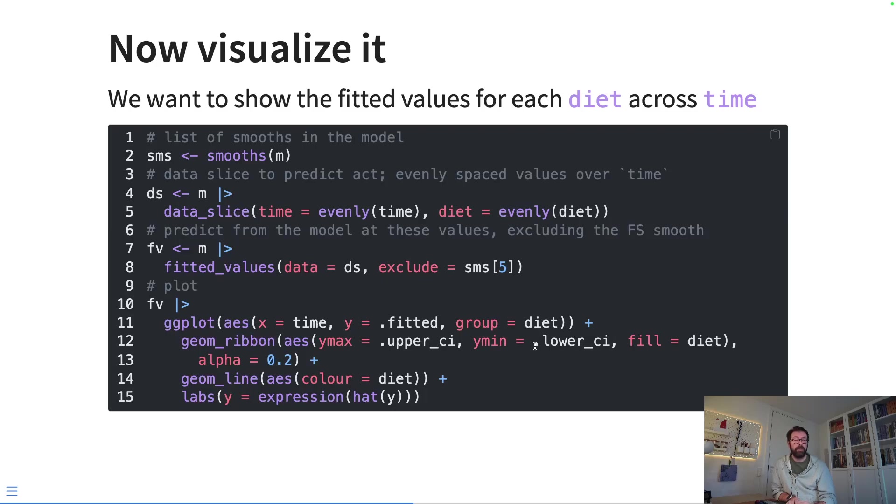We plot the credible interval, setting the upper and lower confidence intervals to the upper and lower margins of the ribbon, and we want to color them by diet so we use the fill here. Then we add on the fitted smooth itself and a little bit of a nice label on the y-axis. So these are all things that we might like to do if we're just visualizing the fitted model.